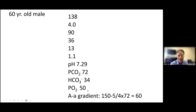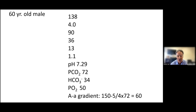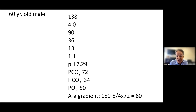This patient has a normal A-gradient, so the low PO2 in the blood is because of a low PO2 in the alveoli — not a parenchymal lung problem. The reason for the low alveolar PO2 is the PCO2 is much higher than normal. In the alveoli you can only have a total pressure of about 150 mmHg — because atmospheric pressure is 760, you subtract 47 for water vapor, leaving 713 mmHg, and 21% of that is oxygen, giving approximately 150 mmHg.